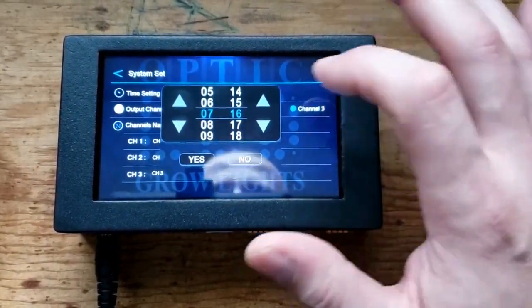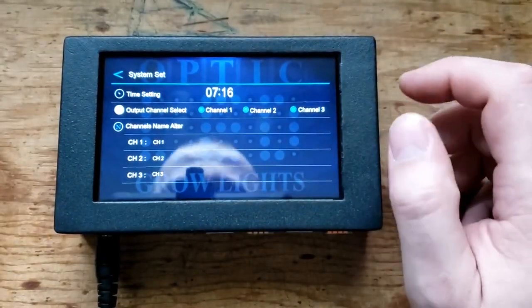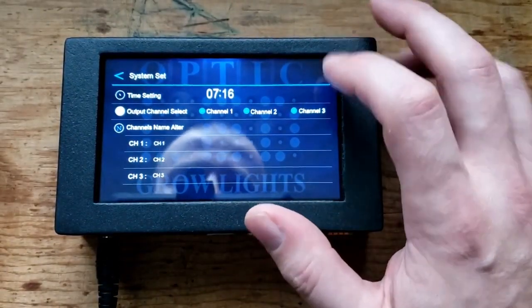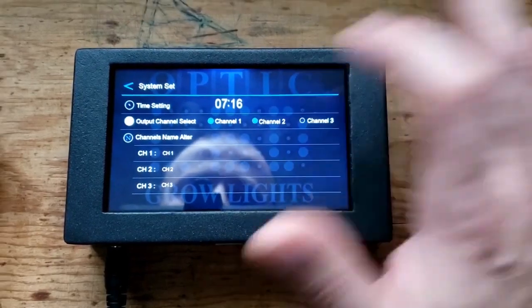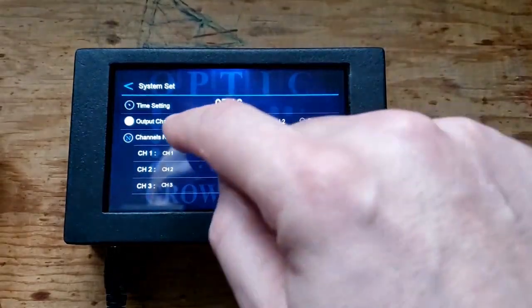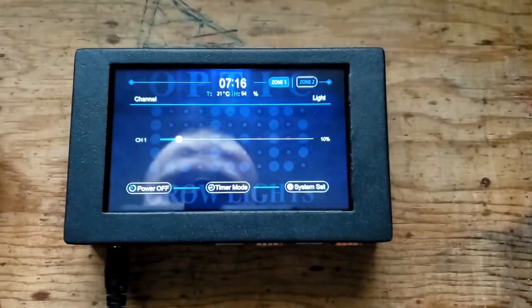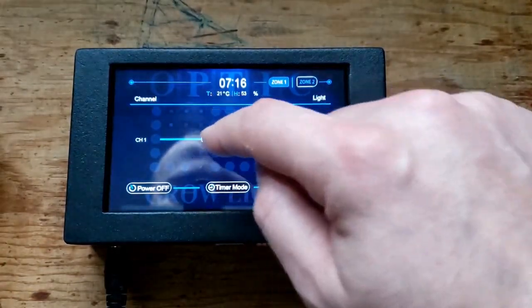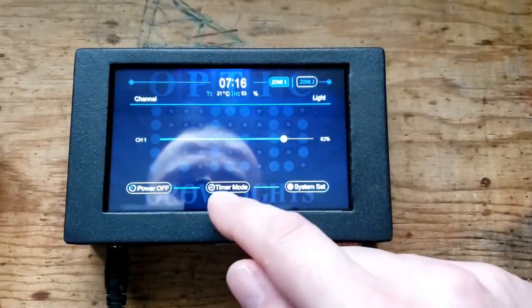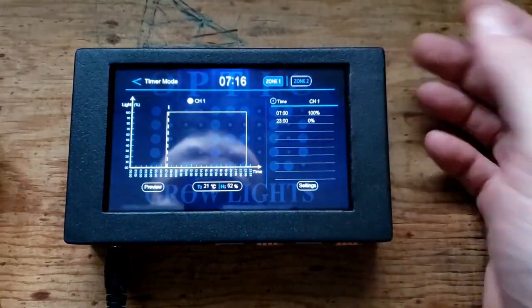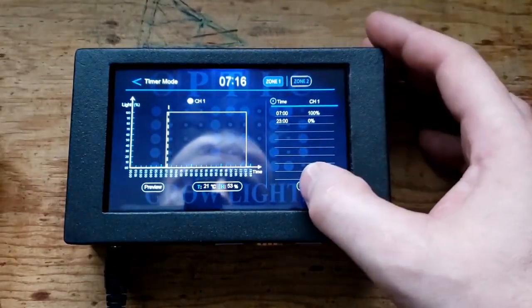We'll go seven sixteen now, push set. So right now I am only running the Slim 600H, so I will turn off channel two and channel three as the Slim 600 only has one channel. So then you come back like this, there's your manual dimming so you can turn it up and down however you see fit.